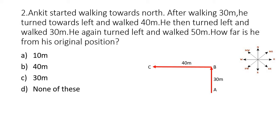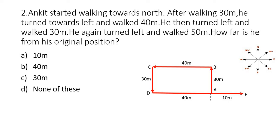He then turned left and walked 30 meters — marking that as D. He again turned left and walked 50 meters — marking the endpoint as E. I'm dividing the 50 meters as 40 and 10. So as per the question, the distance between A and E is 10 meters.